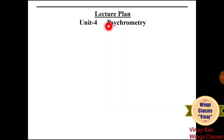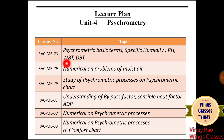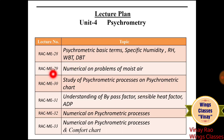Unit 4, Psychrometry, is again one of the most important units because the basic psychrometric processes are also required in Unit 5. So we must study Unit 4 before Unit 5. Lecture 28 covers Psychrometric Basic Terms: Specific Humidity, Relative Humidity, Wet Bulb Temperature, Dry Bulb Temperature, and Dew Point Temperature — all the key parameters.